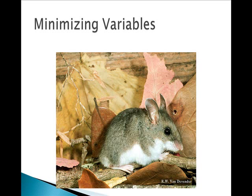Using controlled conditions or constants helps minimize variability between the groups so you can see a true effect on the dependent variable, if there is one. For example, this is a research species I used to work with in physiology research — the white-footed mouse, or Peromyscus leucopus.